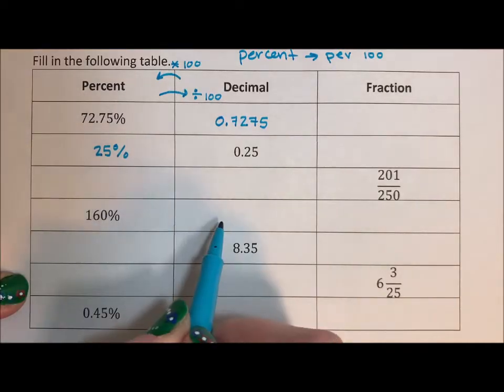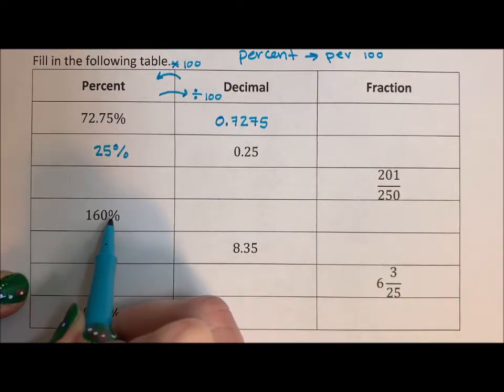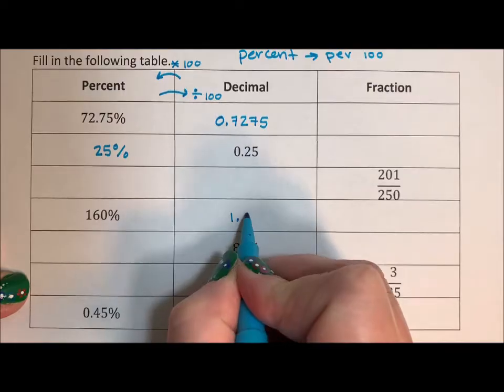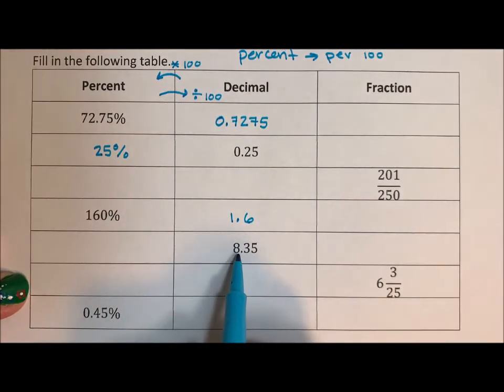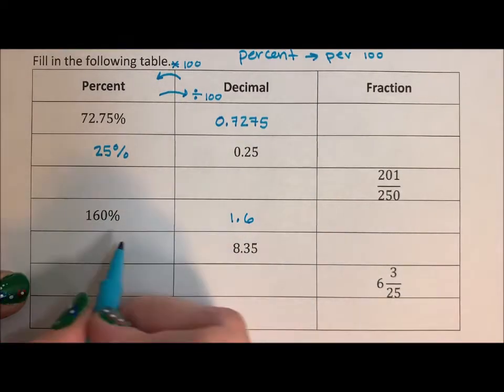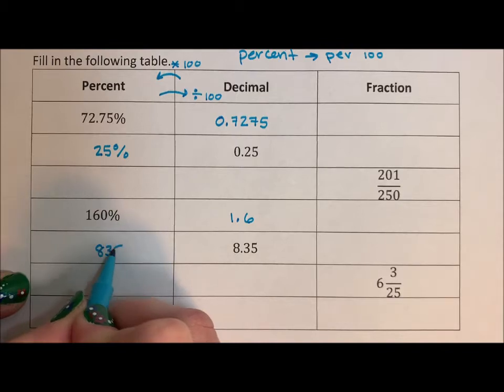So to go from here to here, we divide by 100. 160 divided by 100 is 1.6. 8.35 times 100 is 835%.